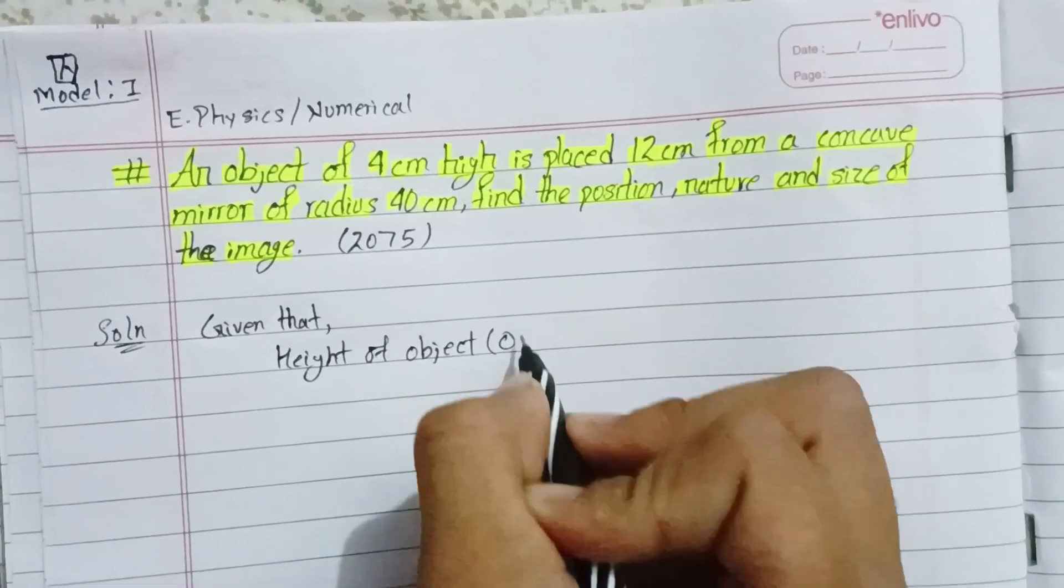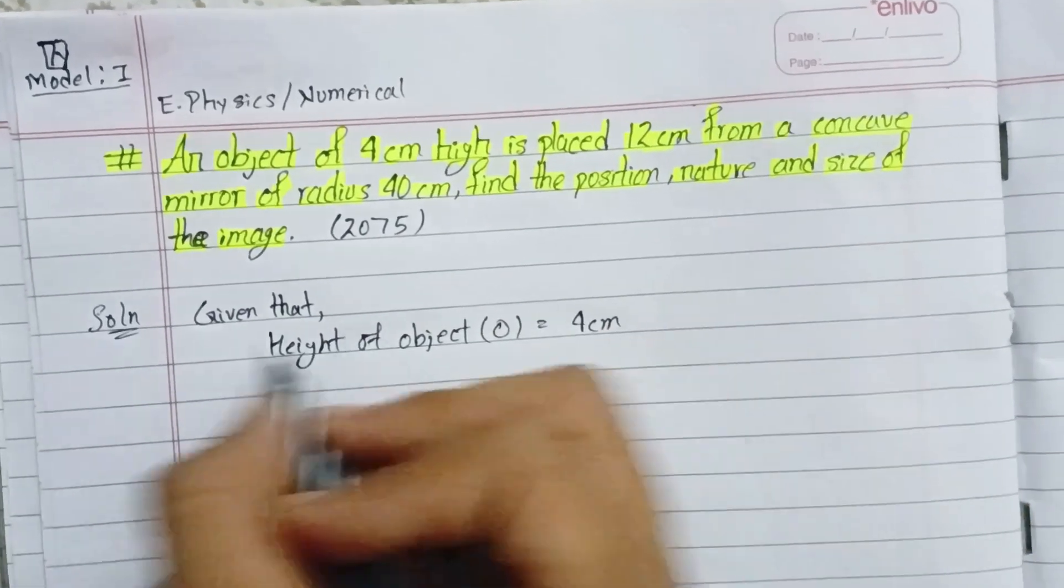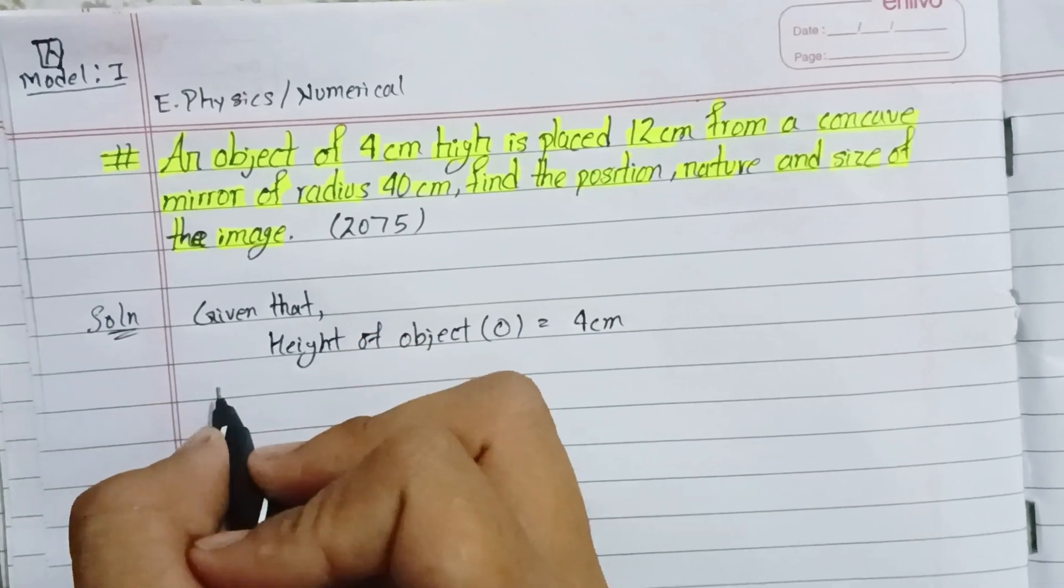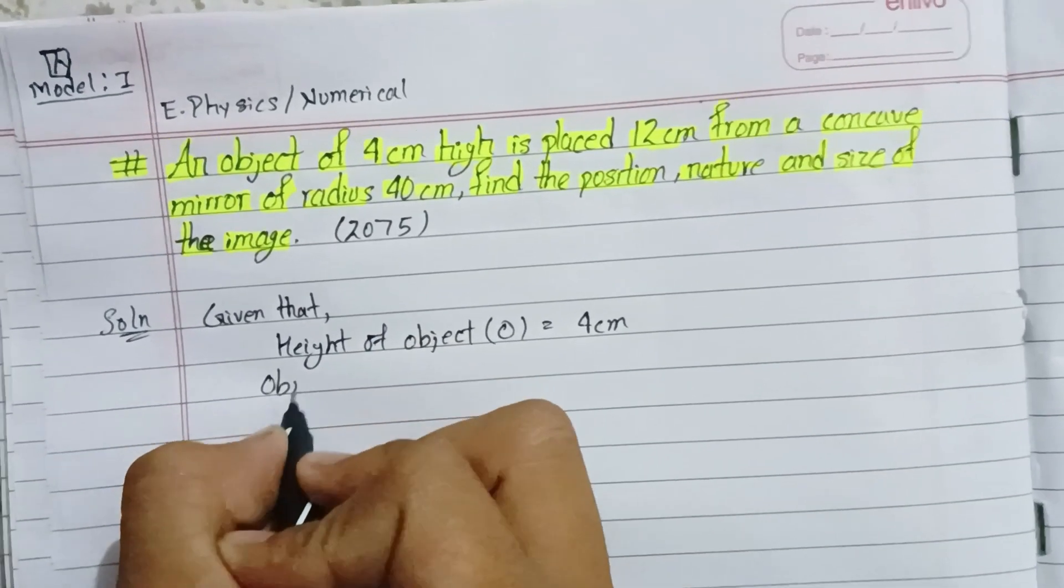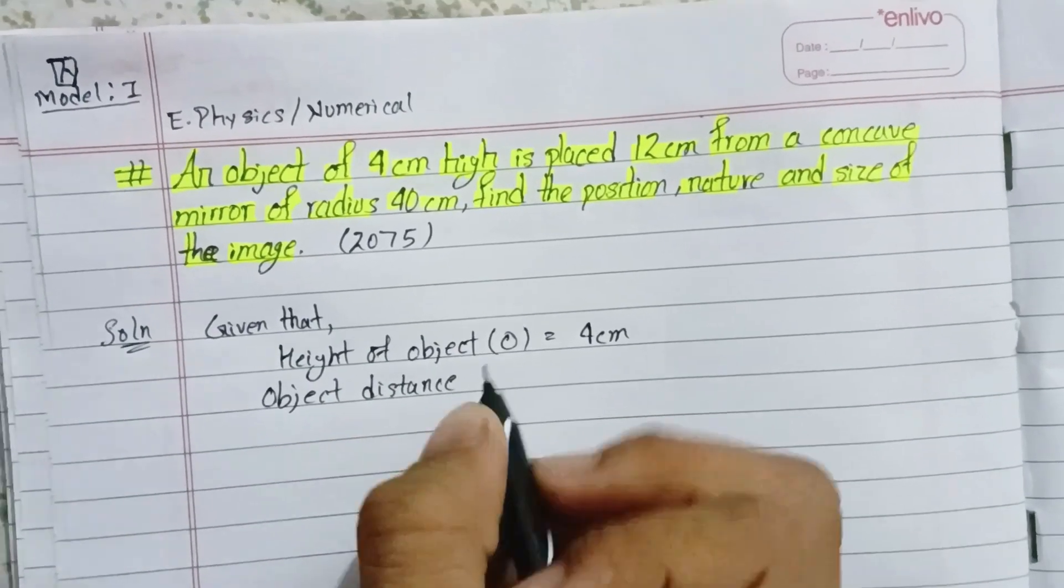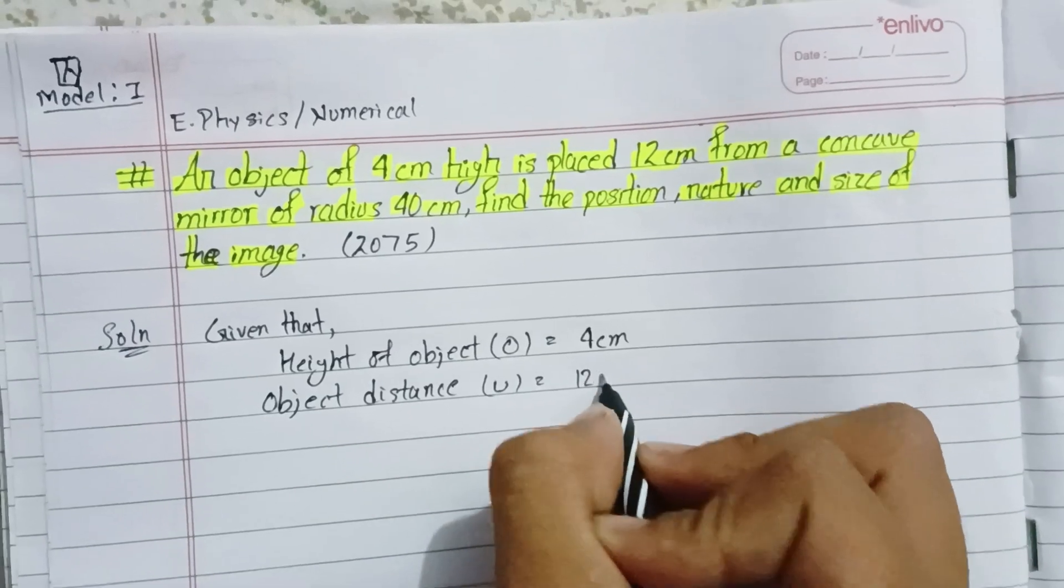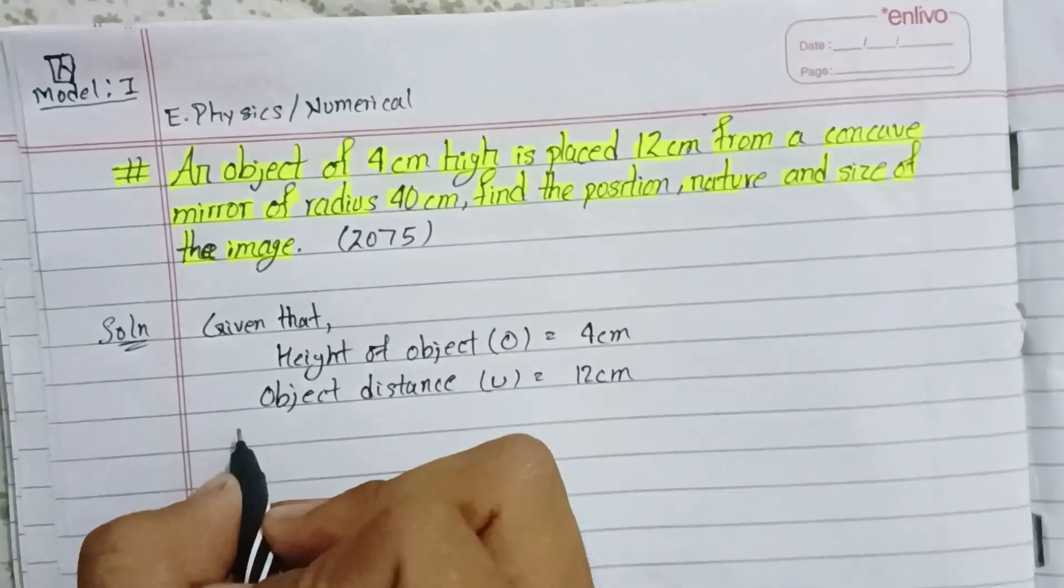Object distance U equals 12 centimeter. Radius of curvature R equals 40 cm.